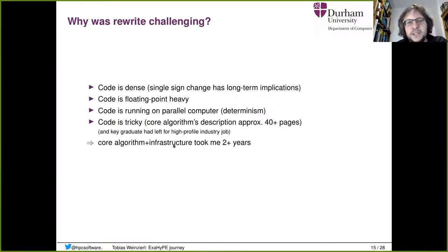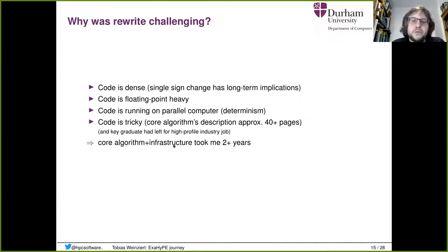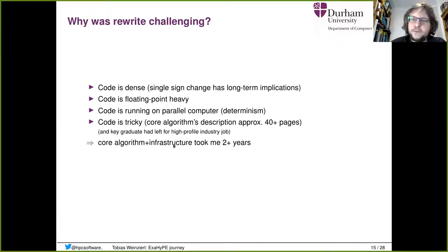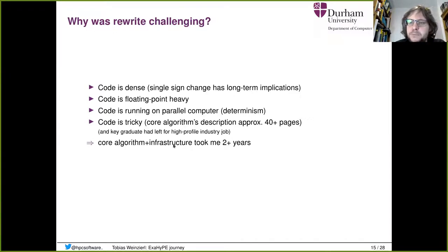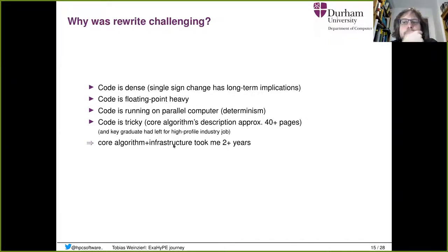Code is dense — a single switch in a numerical code can kill you on the long term. Code is floating-point heavy, making it difficult to test. It runs on a parallel computer, it's non-deterministic — also not easy to test. The core description of the algorithms has 40-plus pages, and unfortunately the key graduate who had written the core had left for a well-paid industry job. So it took me around two years to digest the algorithm and bring up the core infrastructure.